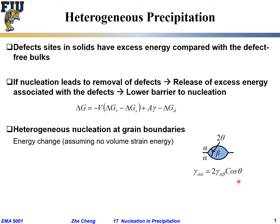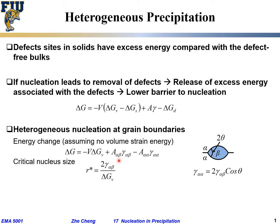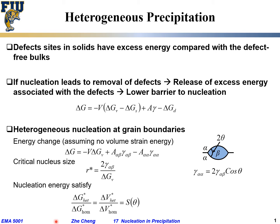The energy change process — neglecting strain energy — includes the volume term, plus the interface created between alpha and beta, minus the grain boundary eliminated between alpha and alpha (which helps us). The critical size can still be derived as before, similar to the homogeneous case under simple assumptions.